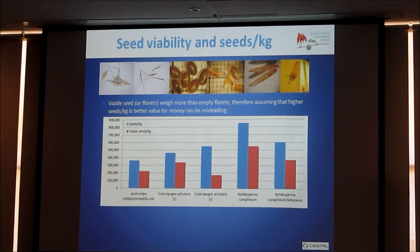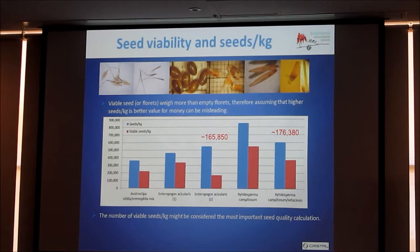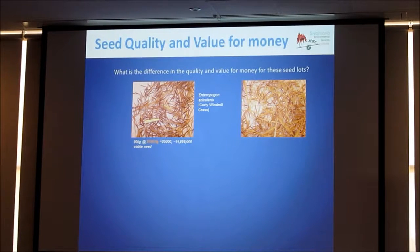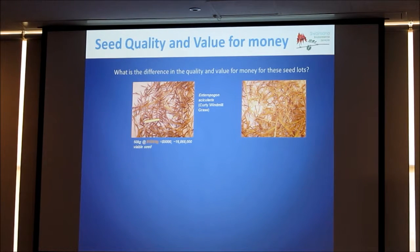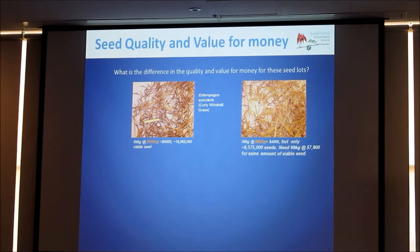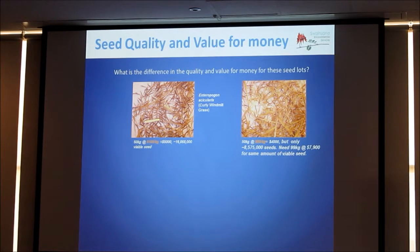Once you combine seeds per kilo and viability, this is how it affects the data — you can see the difference between two seed lots for the same kilo rates. The number of viable seeds per kilo is pretty much the most important calculation. The prices I'm using here are fairly random as examples. Let's say you wanted to collect 50 kilos of the one on the left — that's about five grand and 16.8 million viable seeds. The one on the right looks like it's lower purity and slightly lower in price, but it's only half the amount of seed — 8.5 million. You actually need almost double the kilos, which results in a higher price for the same amount of seed and potentially the same number of plants.